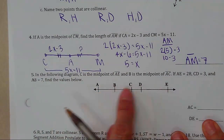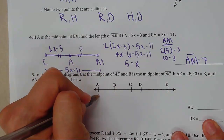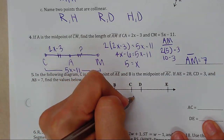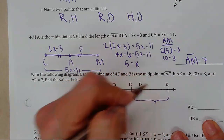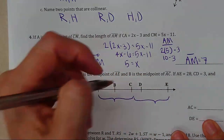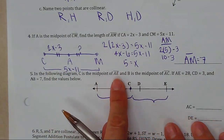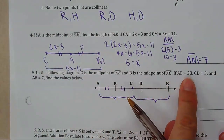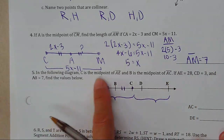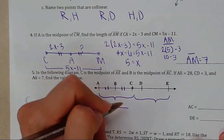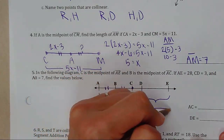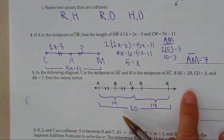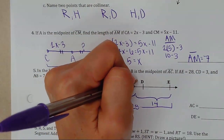C is the midpoint of AE, so AC and CE are congruent. B is the midpoint of AC, so AB and BC are congruent. AE equals 28, so AC equals 14 and CE equals 14. We're also told that CD equals 3. The question asks for AC, which equals 14.